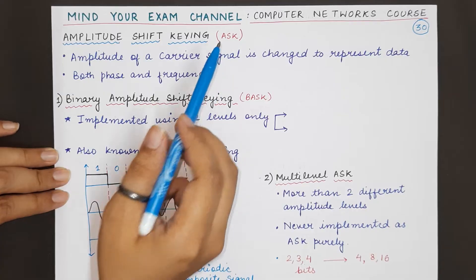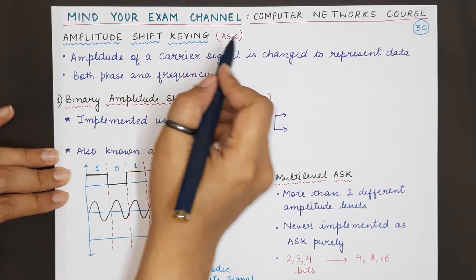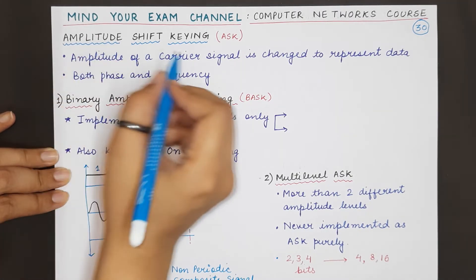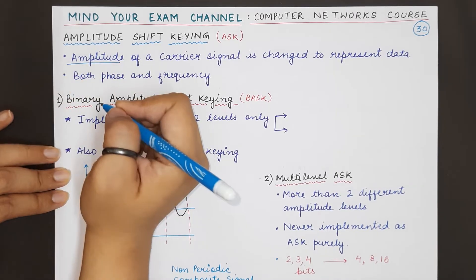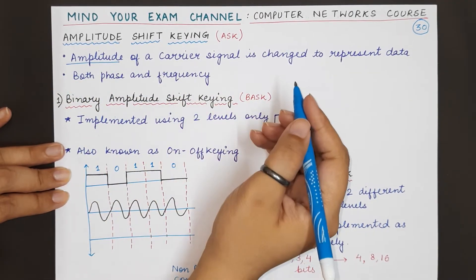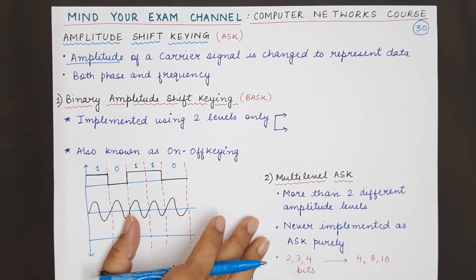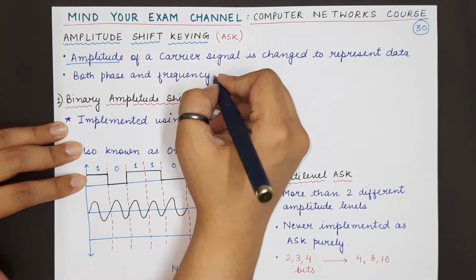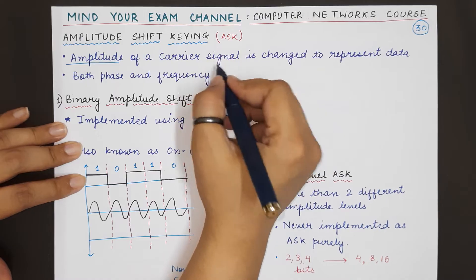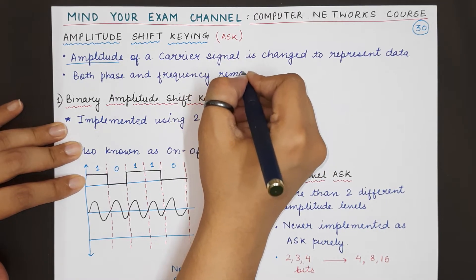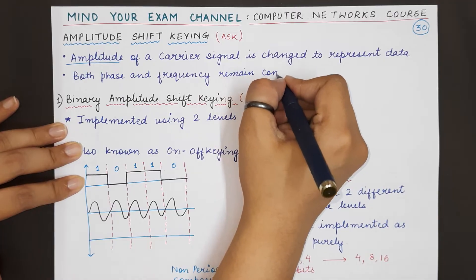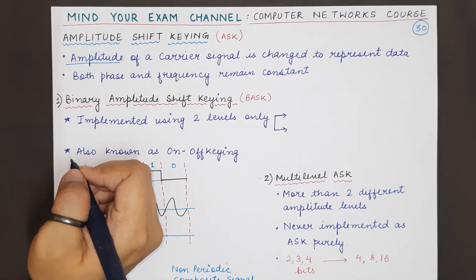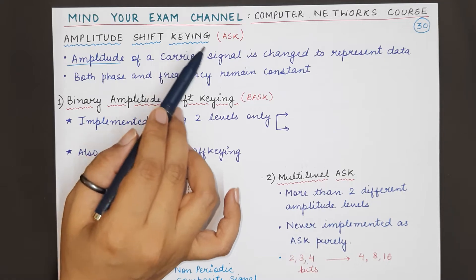Now let us understand what is amplitude shift keying. In amplitude shift keying we are basically changing the amplitude of the carrier signal so that we can represent the digital data that we want to transmit. Only the amplitude of the signal is changing, and both phase and frequency — the other two characteristics of the carrier signal — remain constant. We only change the amplitude in case of ASK.